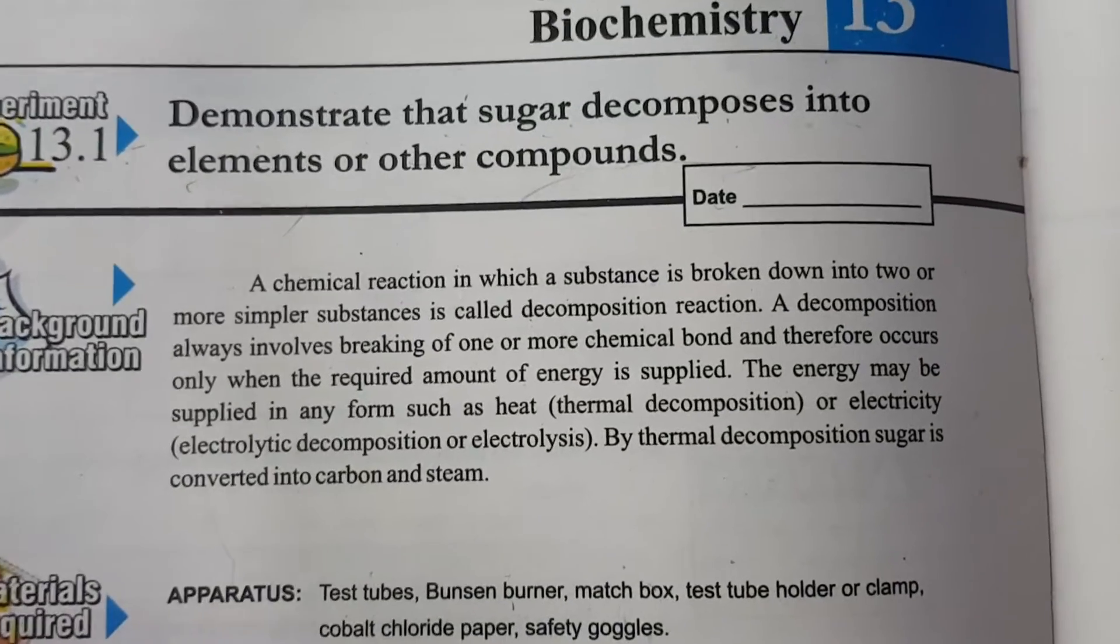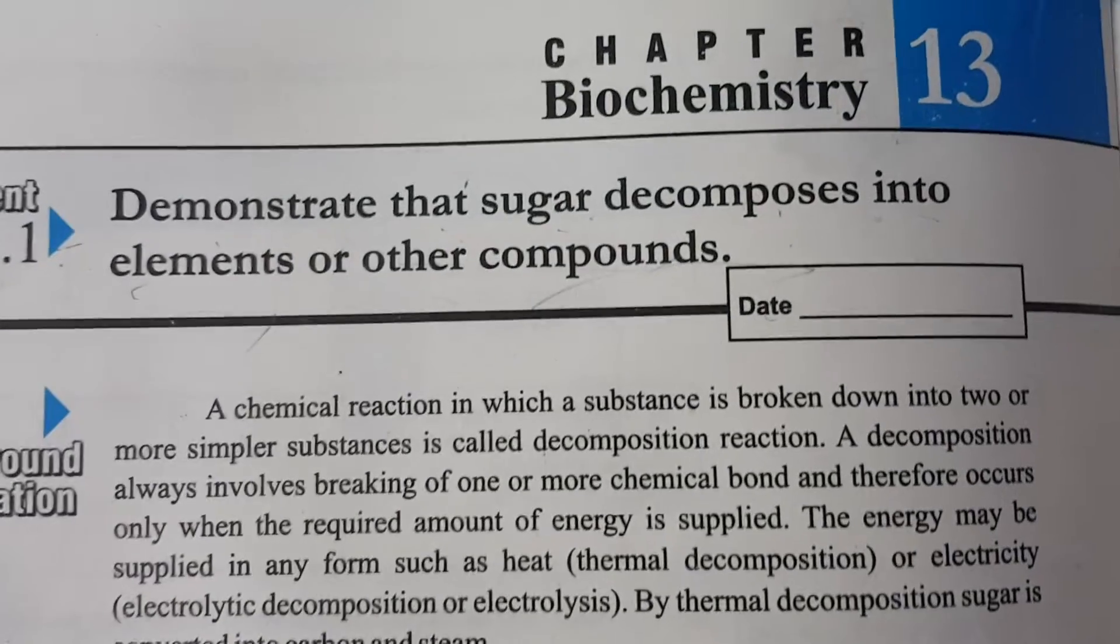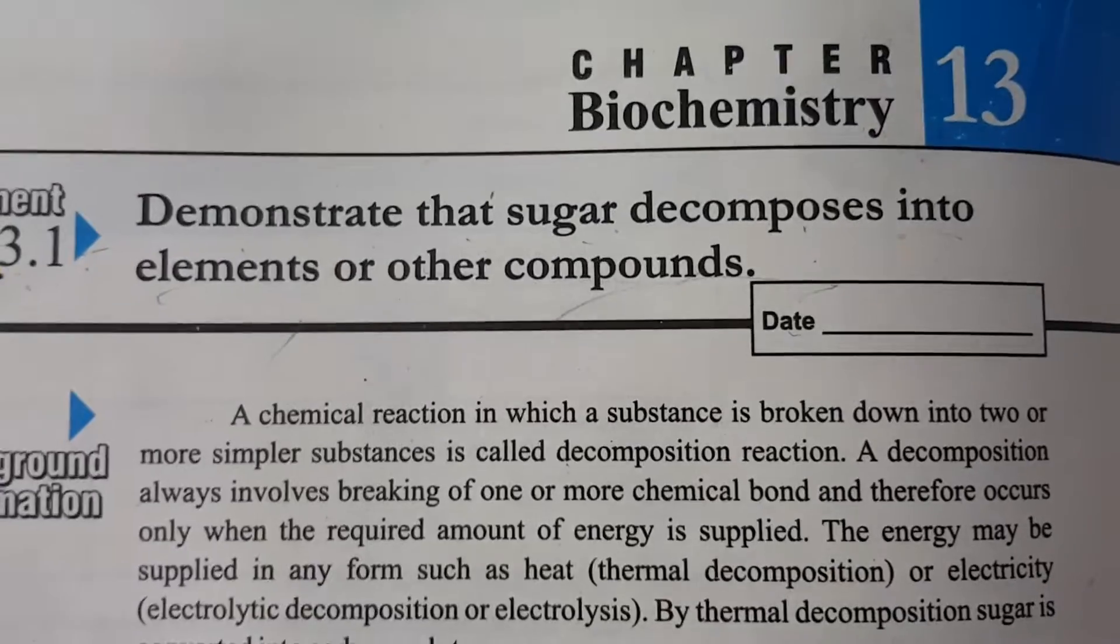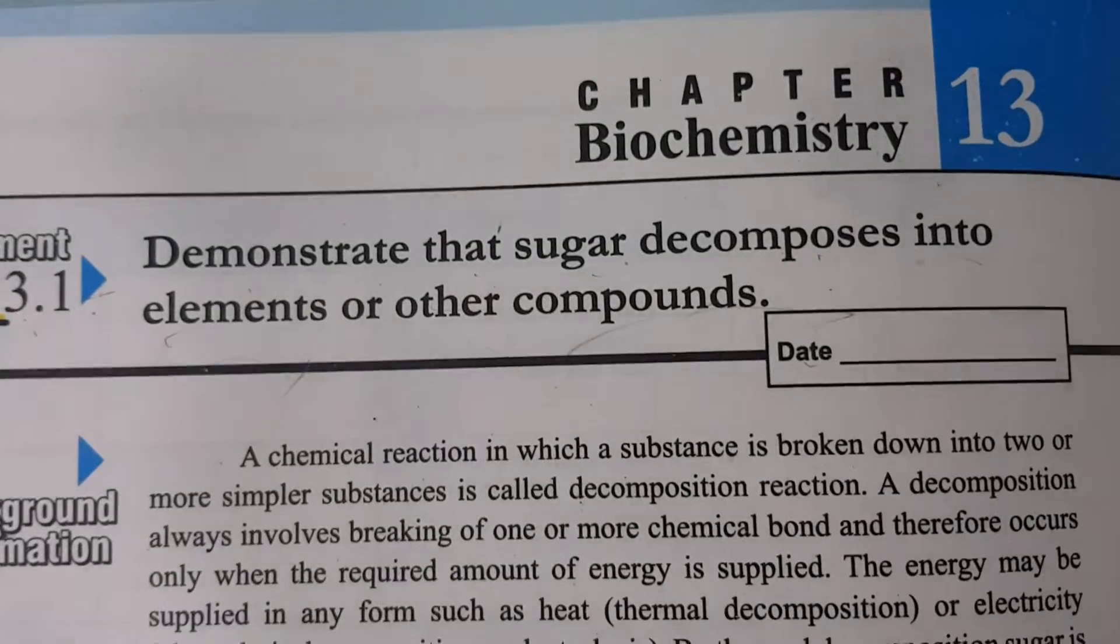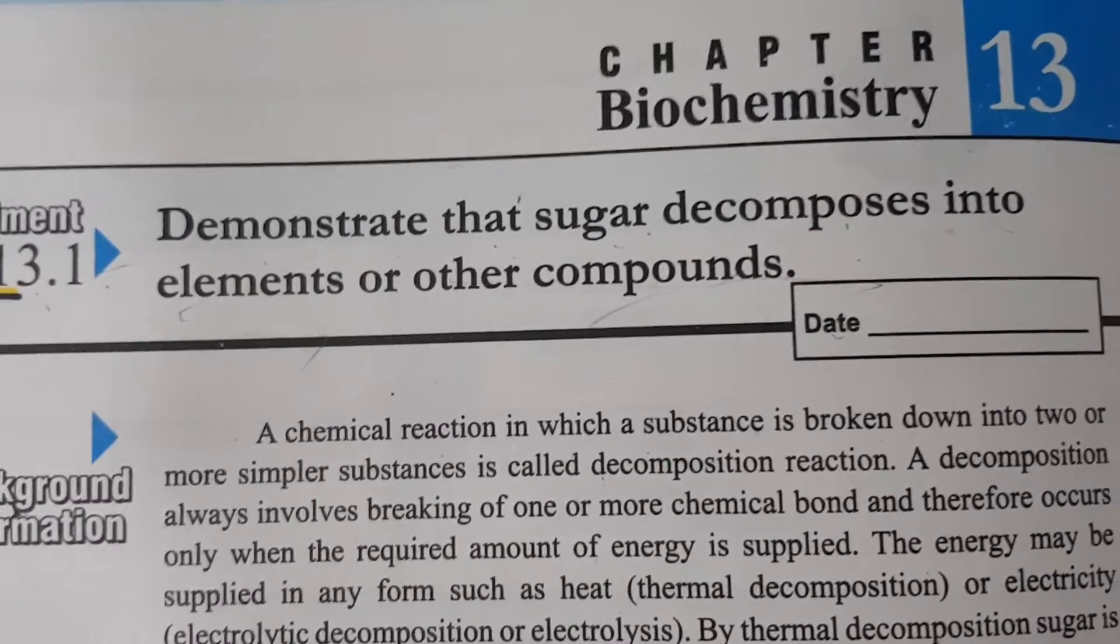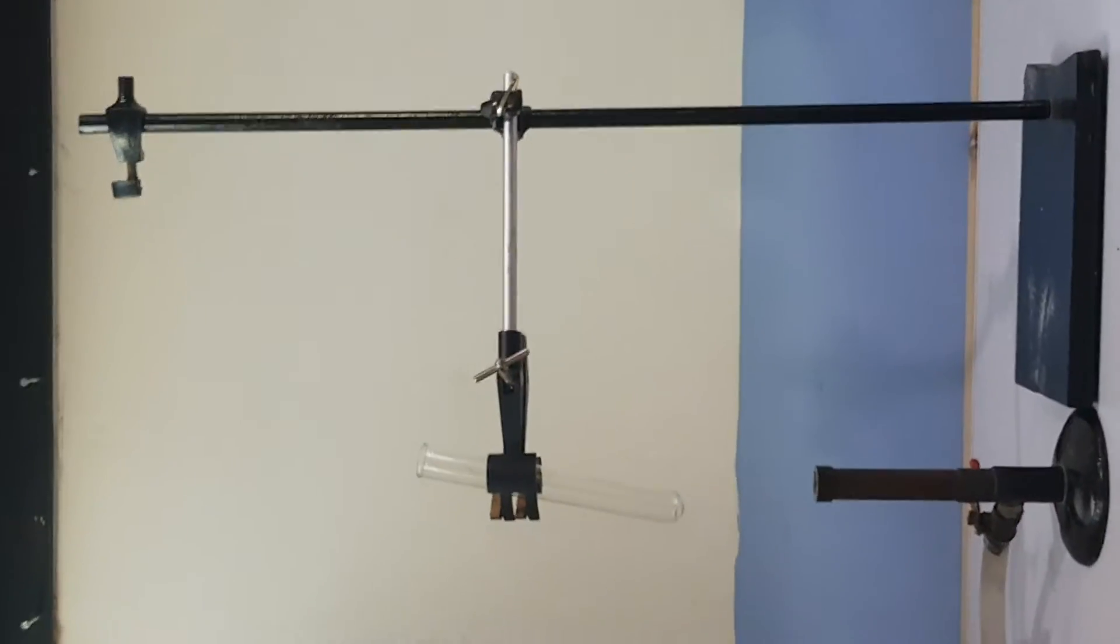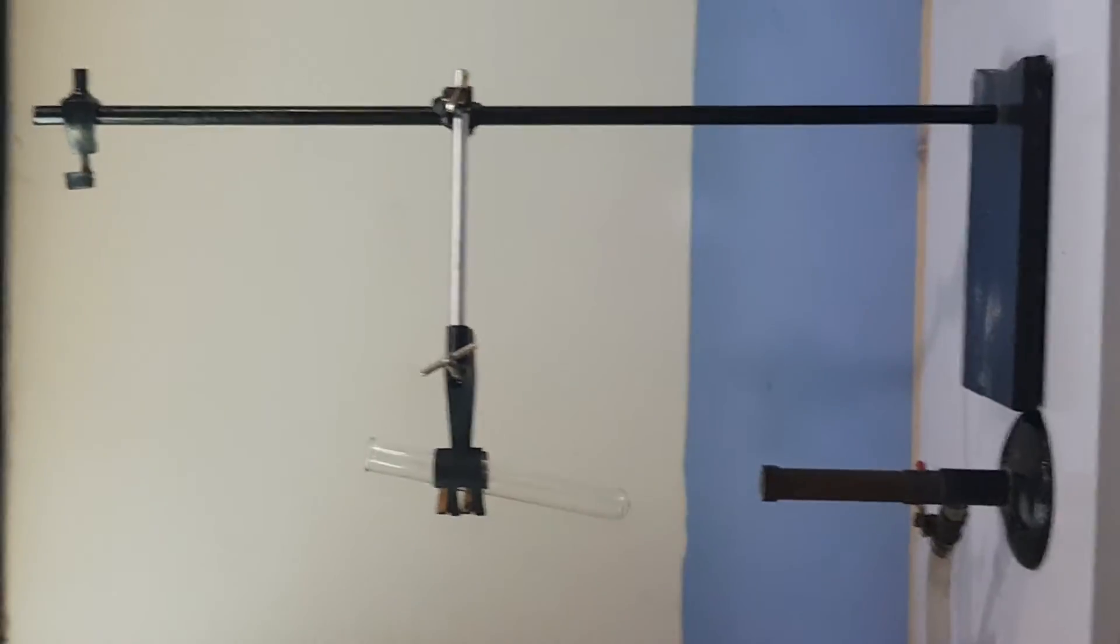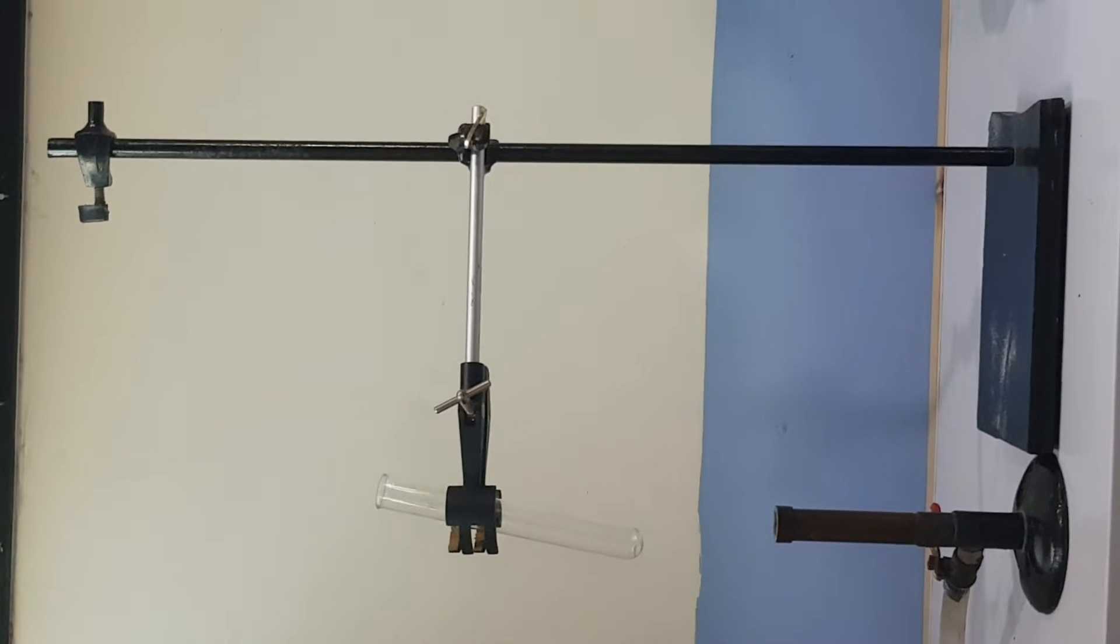In this experiment, we will demonstrate that sugar decomposes into elements or other compounds. For decomposition of sugar, we will heat it on the flame in a test tube. We will hold the test tube with a clamp on an iron stand.